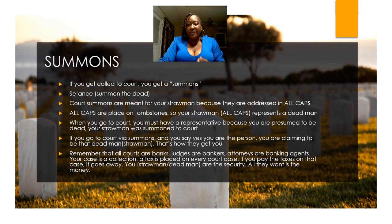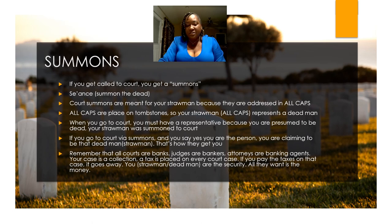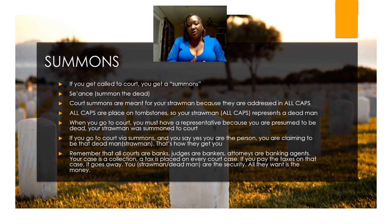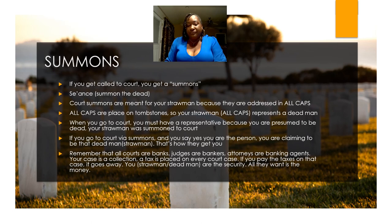When you get a court summons, they're summoning your straw man. Your straw man is considered a dead entity — that's why it's in all caps. You have all caps on tombstones. So they're summoning the dead man. When you go to court, you have to have a representative because a dead person can't represent themselves. So when you go to court and you answer "yes, that's me," then you are saying that you're that straw man. One of the legal things they say to do: when your name — or that straw man's name — is called, you say "I am the authorized representative for the represented person." You don't claim that you're that person. You just say you're the authorized representative. And when you sign your autograph, you also put that you're the authorized representative of the represented person. So it's saying that you're the beneficiary of that straw man.